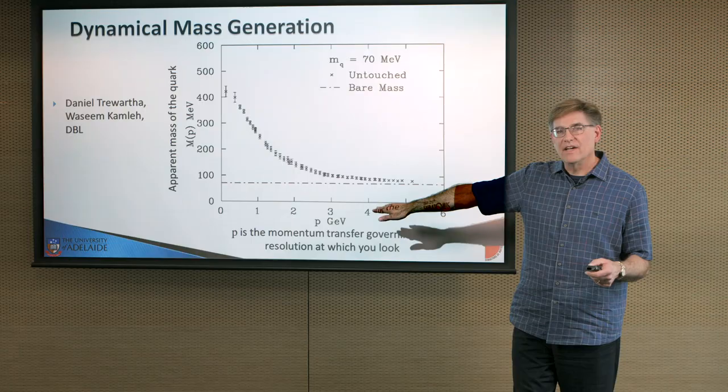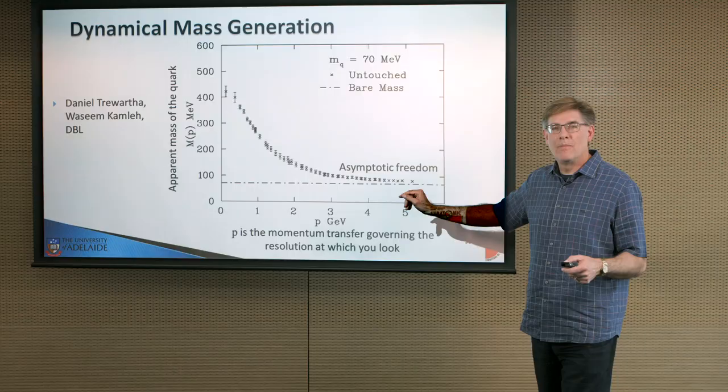This area is called asymptotic freedom. It's a very important aspect of QCD. The interactions become weak at short distances.